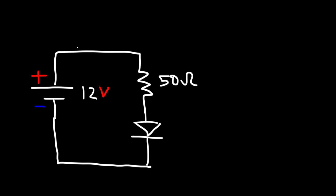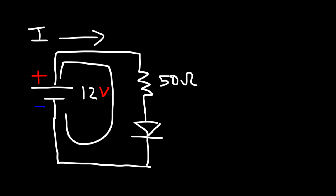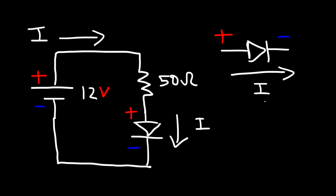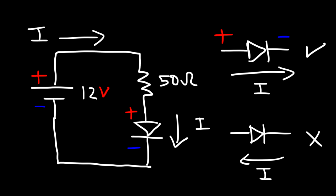If there is a current, what is it, and what is the power consumed by the diode? We know that conventional current always flows from positive to negative, so current is flowing in this direction. Notice that the conventional current is flowing in the same direction as the arrow in the diode symbol, so the diode is on. If conventional current flows opposite to the arrow, it won't conduct. This is a simple way to tell if the diode is on or off — if current flows in the same direction as the arrow and the voltage is 0.7 volts or more, the diode is conducting.